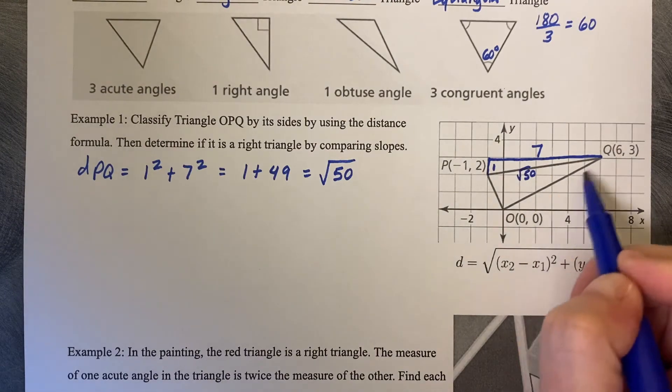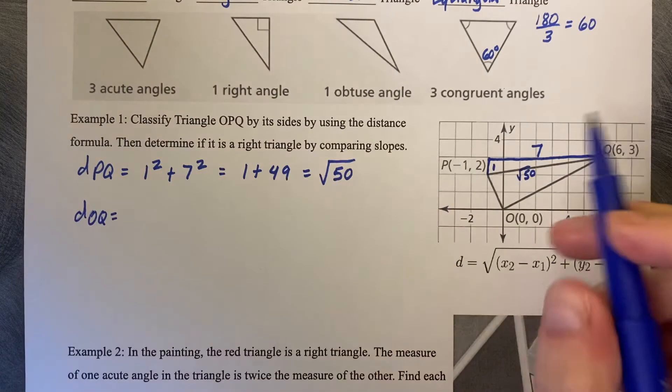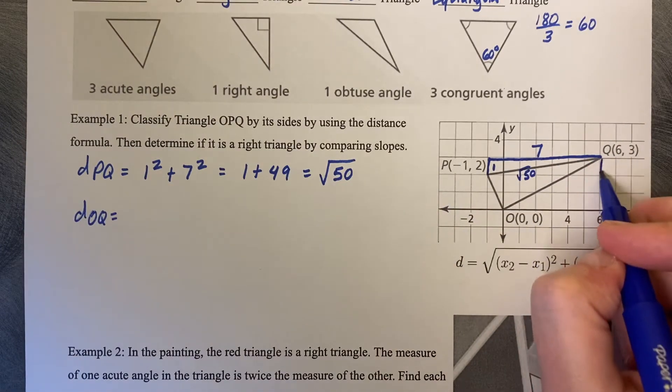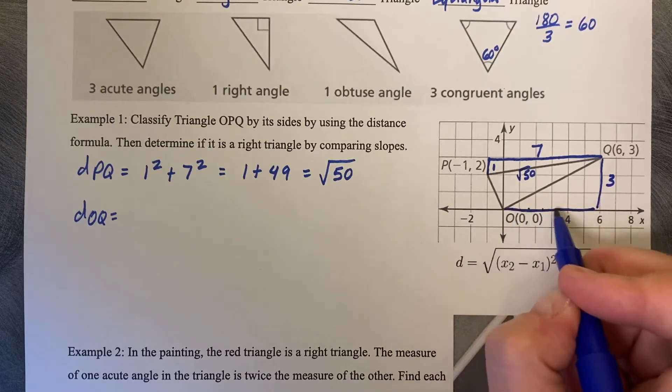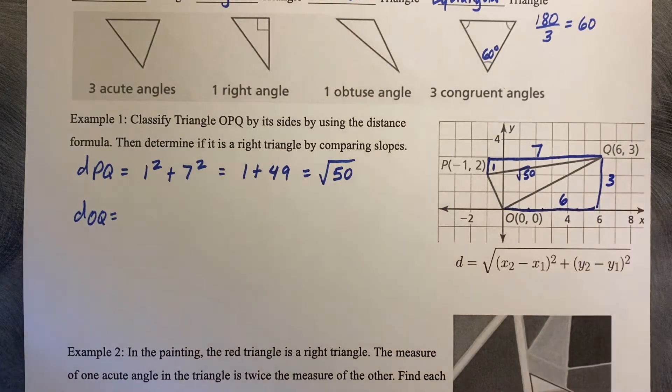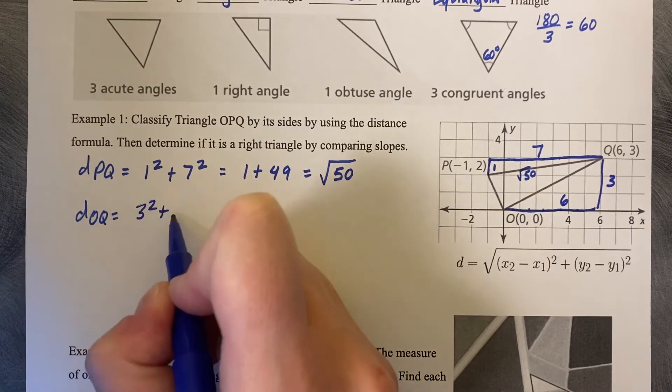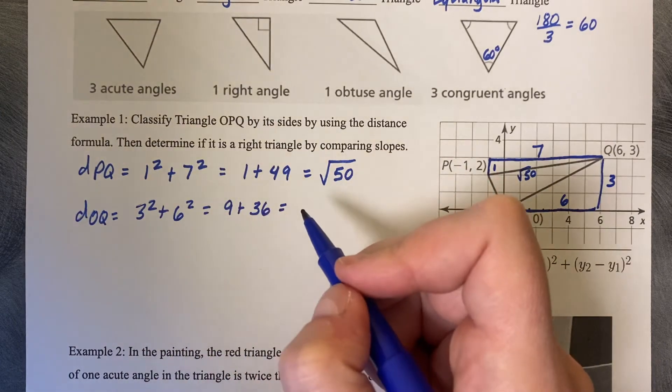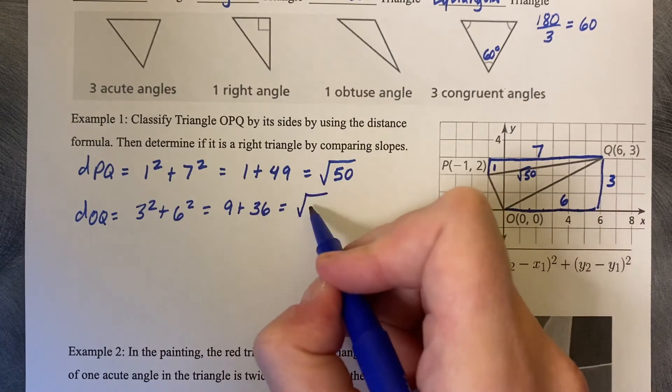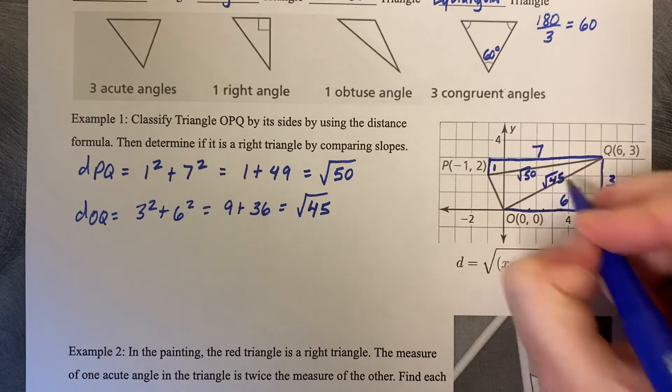We're trying to compare it to the length of OQ. So the distance of OQ is going to be a rise of three and a run of six. You can kind of tell already that those are not going to be the same size because their slope doesn't match. So let's calculate it though. Three squared plus six squared, nine plus 36. If you do nine plus 36, that's going to be the square root of 45. So are those the same length? No.